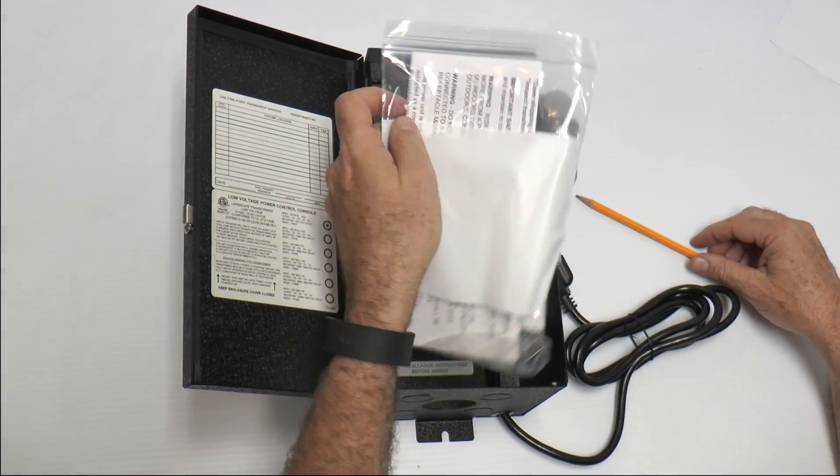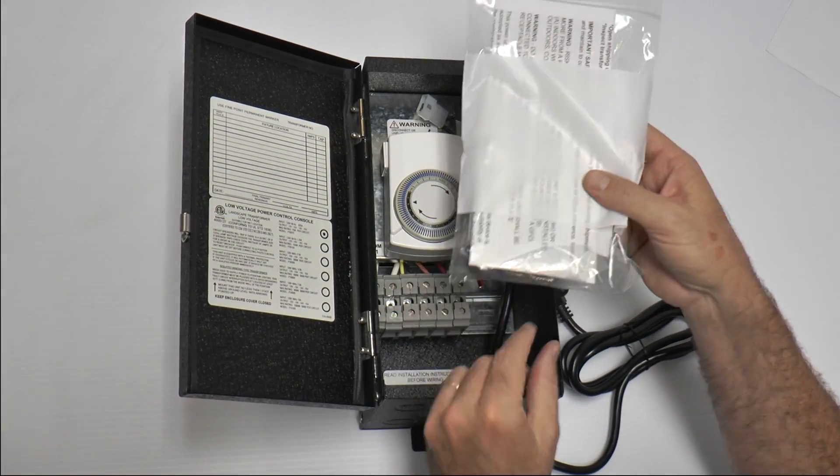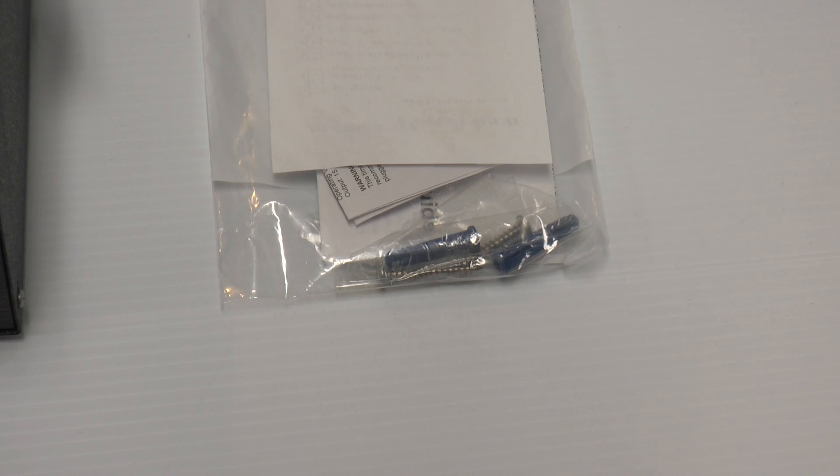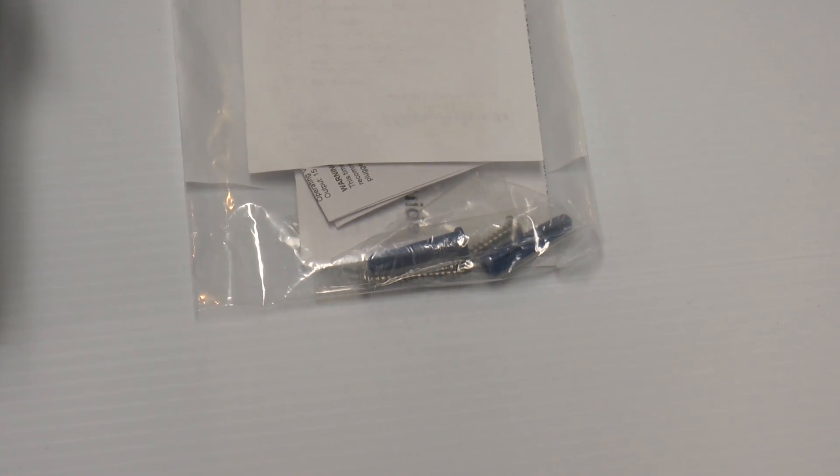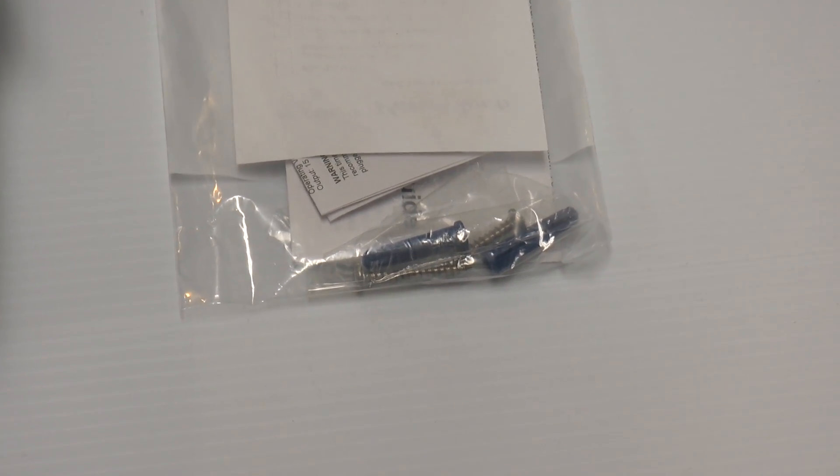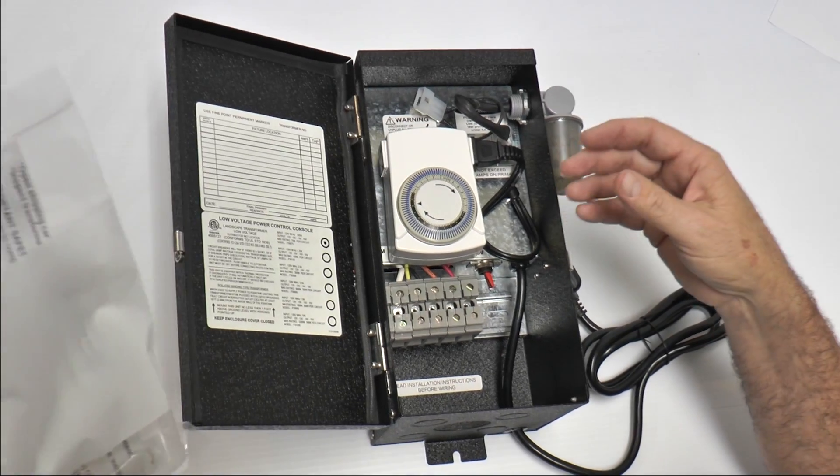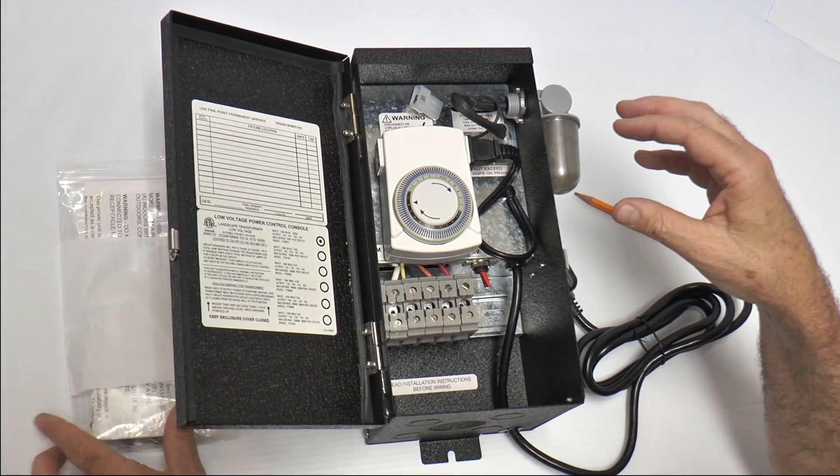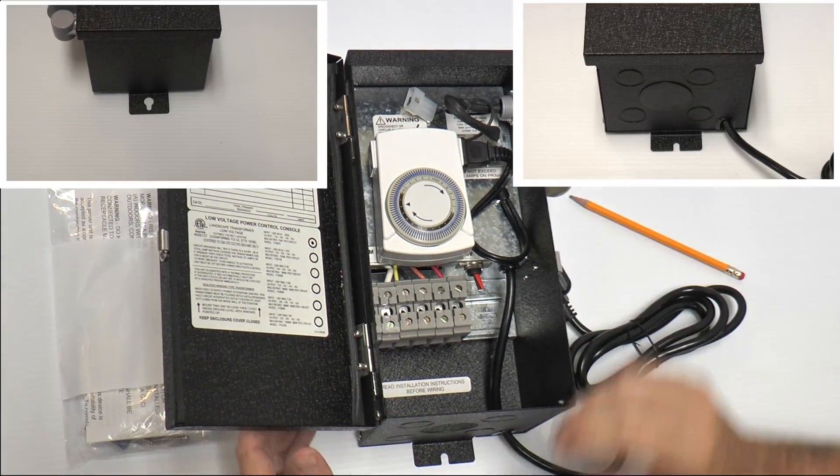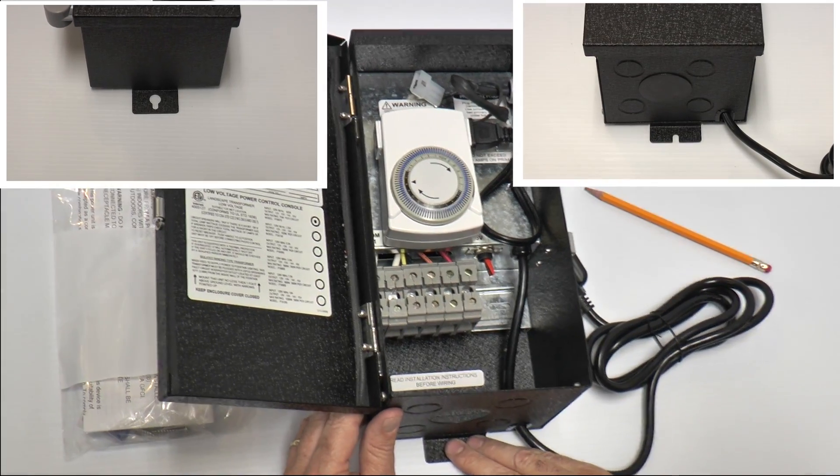It comes with a packet with information, installation instructions, and some heavy duty bolts and fittings if you're going to screw this to a stucco wall. But that's optional, you can use whatever way works for you. The housing does come with mounting tabs to make it easy to install.